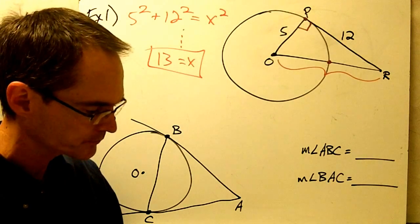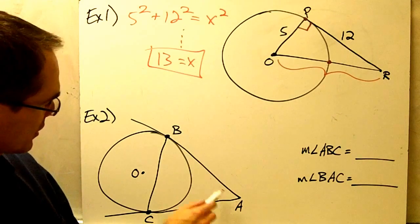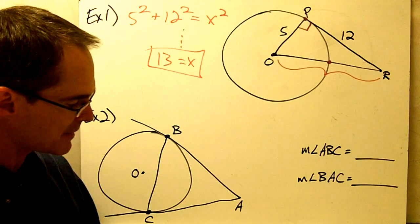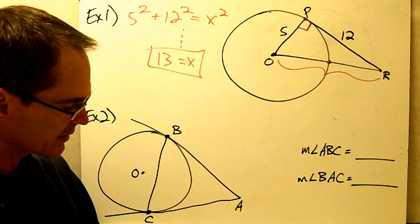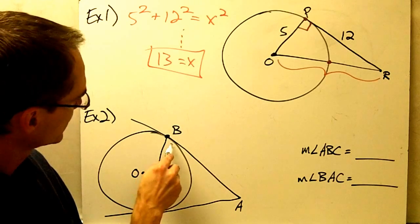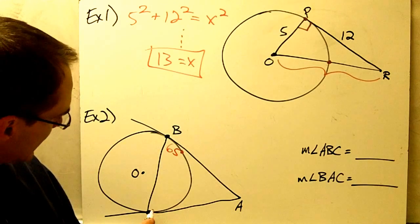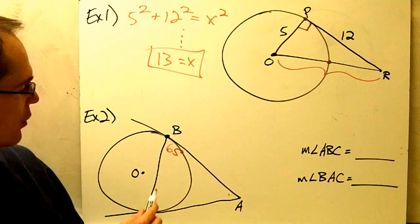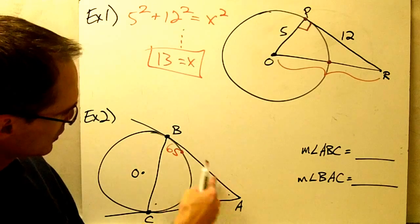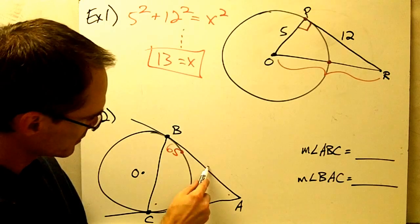Let's go on to example number 2. It says all lines that appear to be tangent are tangent. So this line and this line here are tangent at these two points, B and C. If the measure of angle ABC is 65 degrees, find the measures of these other angles. Measure of angle ABC — that's this angle right here — is 65 degrees. I'm supposed to find the measure of angle ACB and angle BAC. Once again, I'm going to use one of my circle conjectures: the conjecture that tells me that two segments that are tangent to a circle from the same external point must be congruent. That's what Circle Conjecture number 9 tells me.